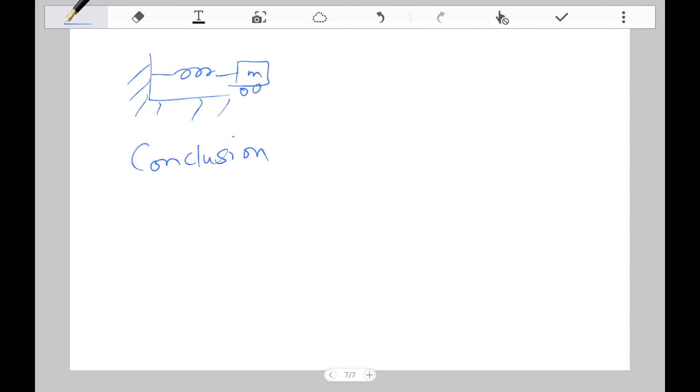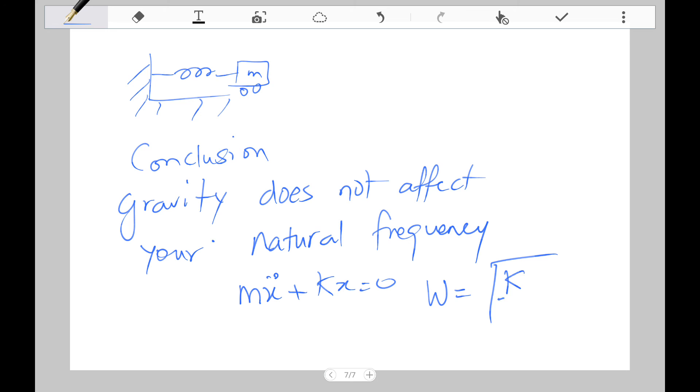So the conclusion of this: gravity does not affect your natural frequency. So now we have that equation there, mx double dot plus kx equals zero. So then divide through by m, and then you've got your angular frequency which is exactly the same as for the system linear system.